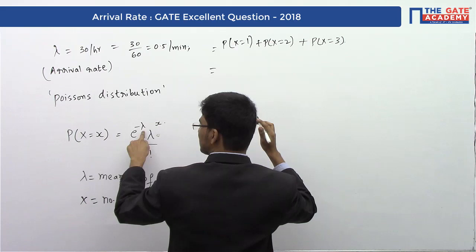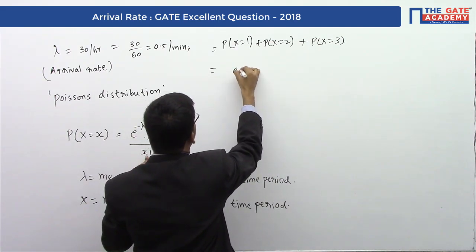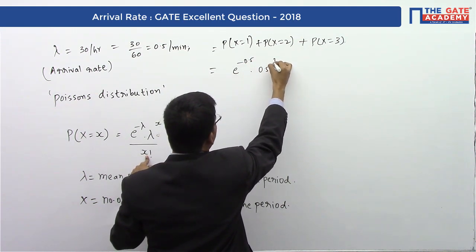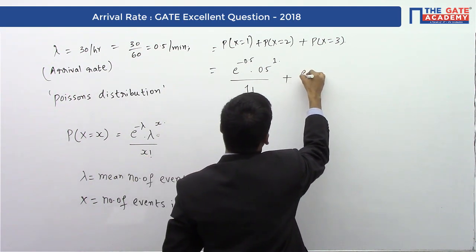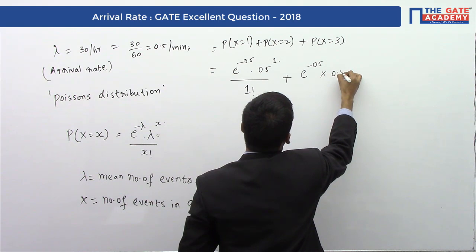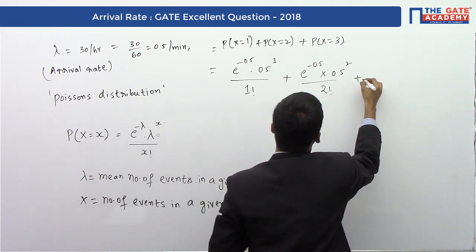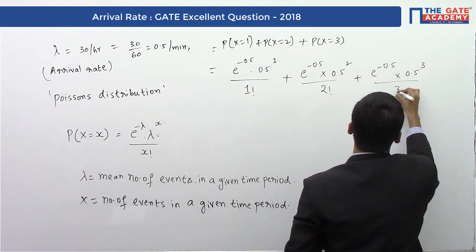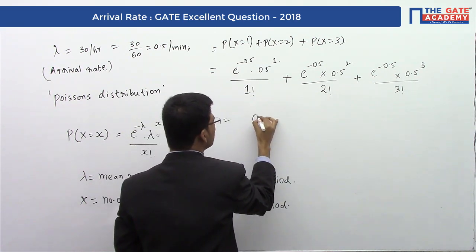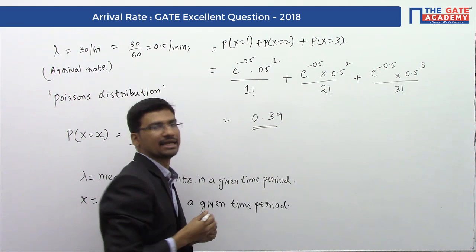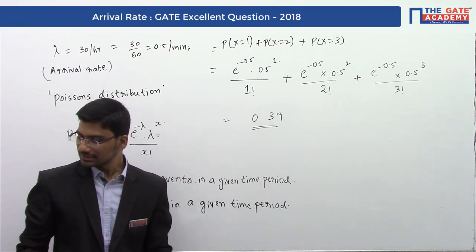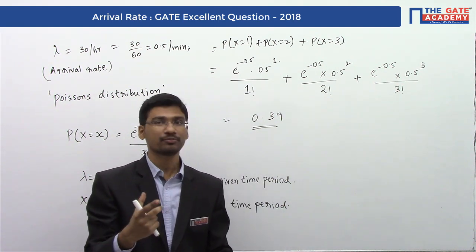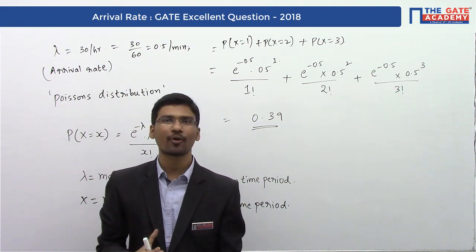Using the equation e^(−λ) · λ^x / x!, we calculate: e^(−0.5) · 0.5^1 / 1! + e^(−0.5) · 0.5^2 / 2! + e^(−0.5) · 0.5^3 / 3!. If you calculate this value, you will approximately get 0.39. So the answer for this numerical answer type question, correct to two decimal places, is 0.39.